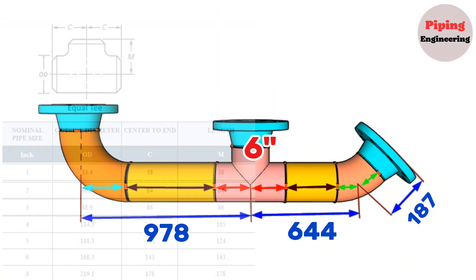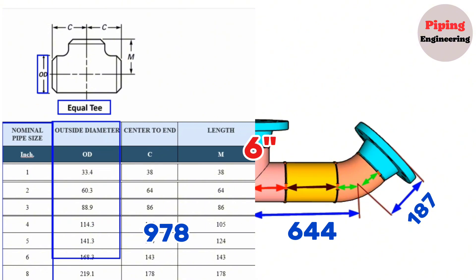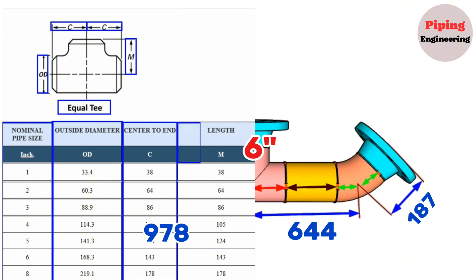Let's look at the equal T dimension chart. Nominal pipe size of equal T's are shown in the first column. The outside diameter of equal T's is shown in the second column. The center to N dimensions of equal T's are shown in the third column — this dimension belongs to both sides of the equal T. The length of the equal T is shown in the last column.